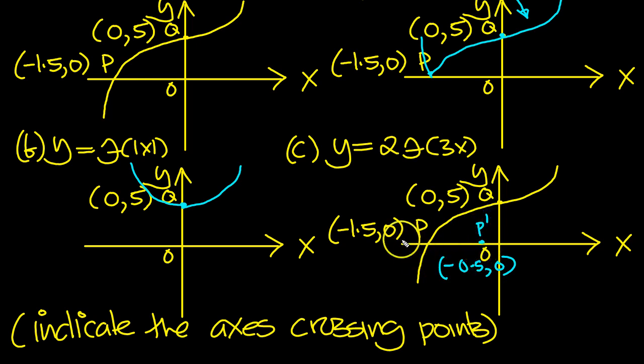This point here, because it's twice, this one will stay there because it's twice 0. This one, because it's twice, it's stretched up. So the y value is stretched up to 10. Although I'm not drawing it strictly to scale,